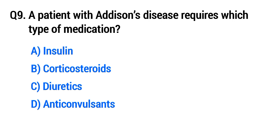Question No. 9: A patient with Addison's disease requires which type of medication? The right option is B, corticosteroids.